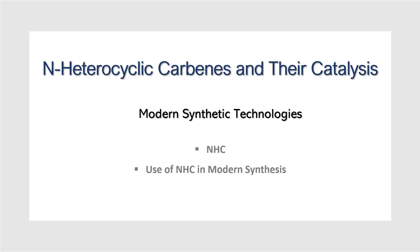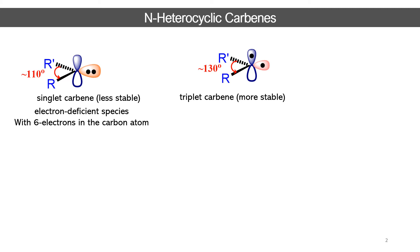Carbenes are very popular reaction intermediates. We know there are two different kinds of carbenes available: one is singlet carbene, one is triplet carbene. These are electrophilic species having six electrons in this particular carbene carbon atom. These six electrons can be accommodated in two different orbitals, having one single electron or maybe a lone pair and a vacant orbital.